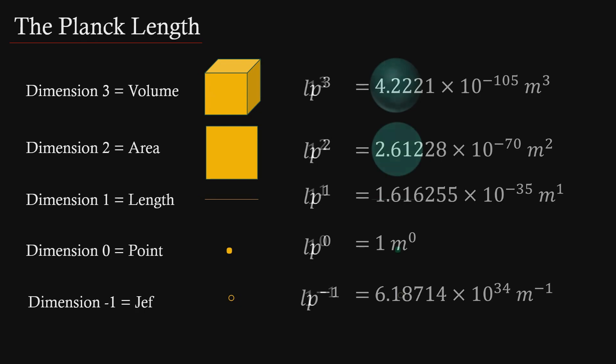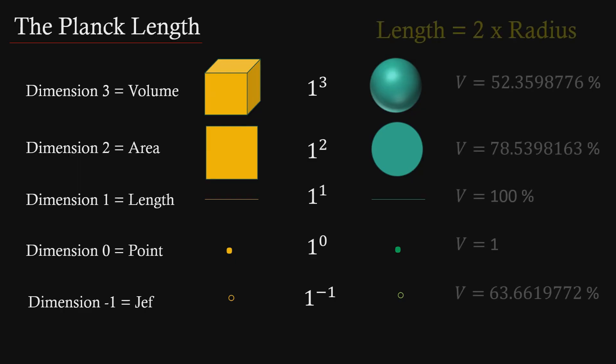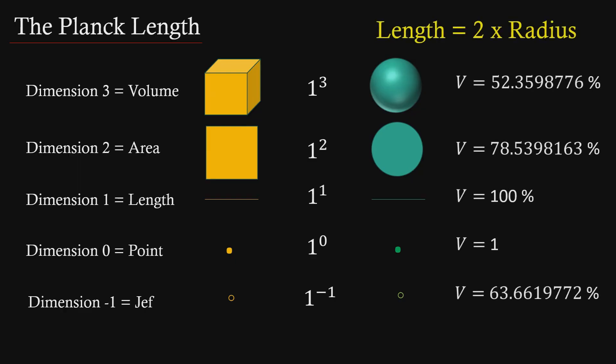Houston, we have a problem. We established in episode 12 that for each dimension there is a direct ratio relationship between an object in traditional measurement and a sphere in dimensional measurement.